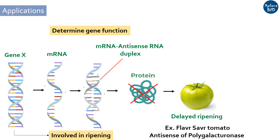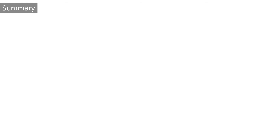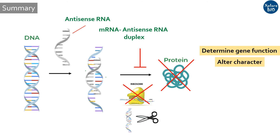Antisense RNA can also be used as a therapeutic tool to treat various diseases in humans, including cancer, viral infections, and neurodegenerative diseases like Alzheimer's and Parkinson's. To sum up, antisense RNA technology is a powerful way to down-regulate a specific gene by inhibiting protein synthesis or mRNA degradation. This makes it a useful tool to understand gene function, alter characteristics, and treat various diseases.